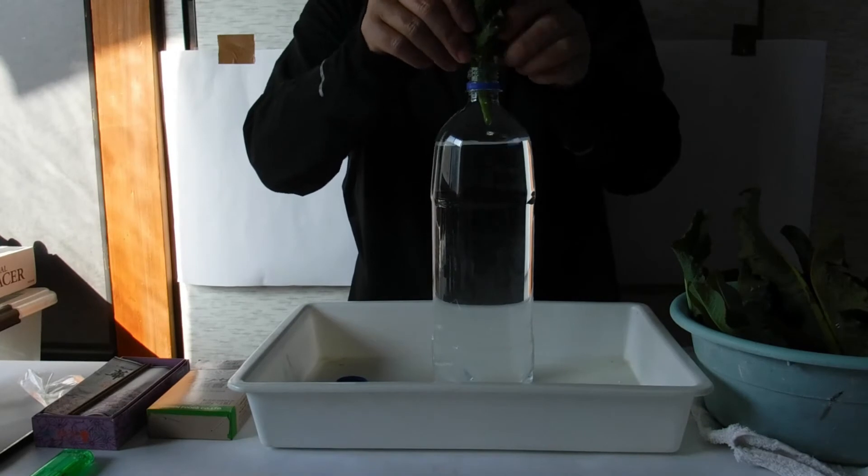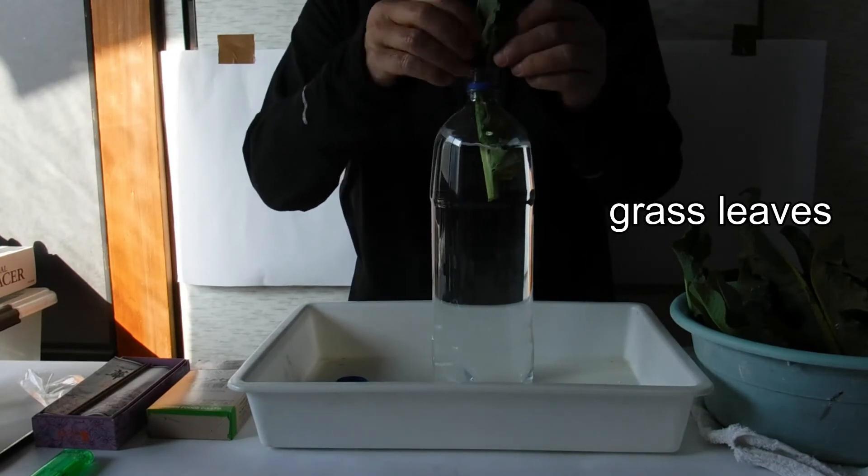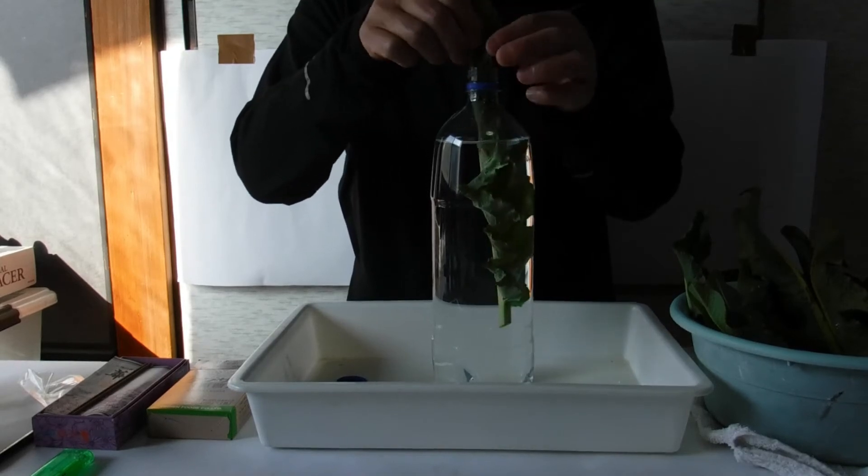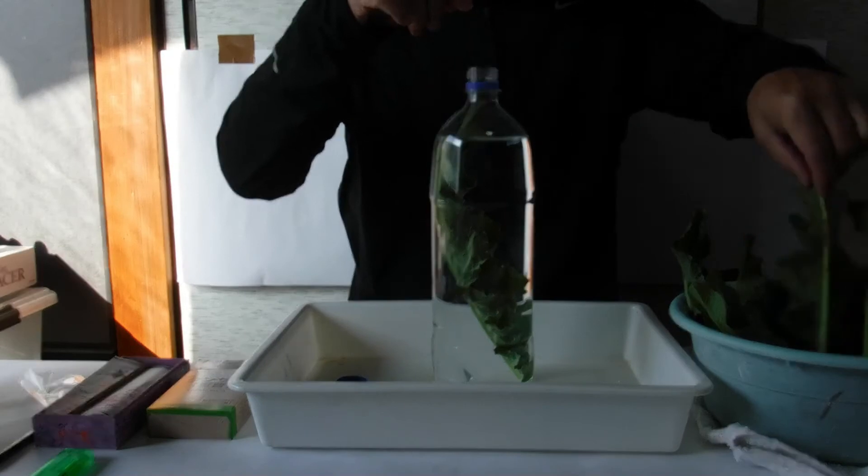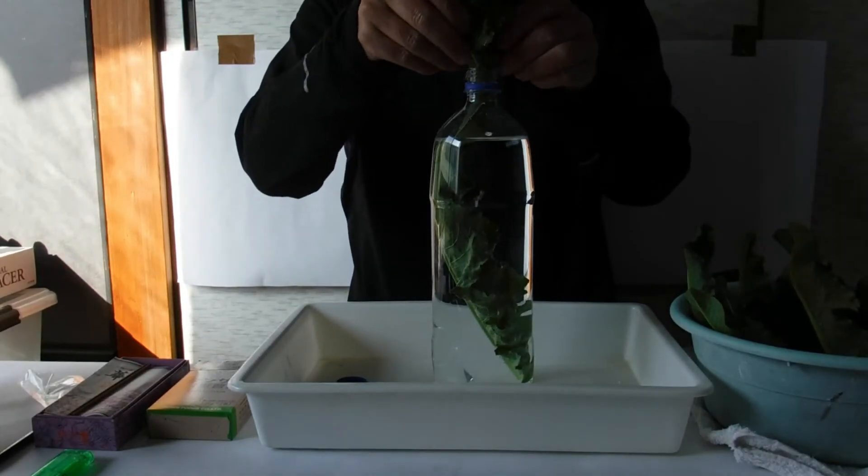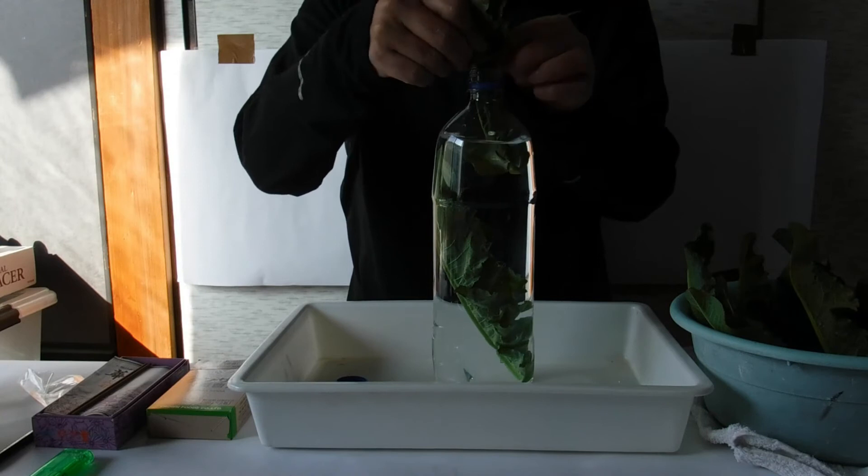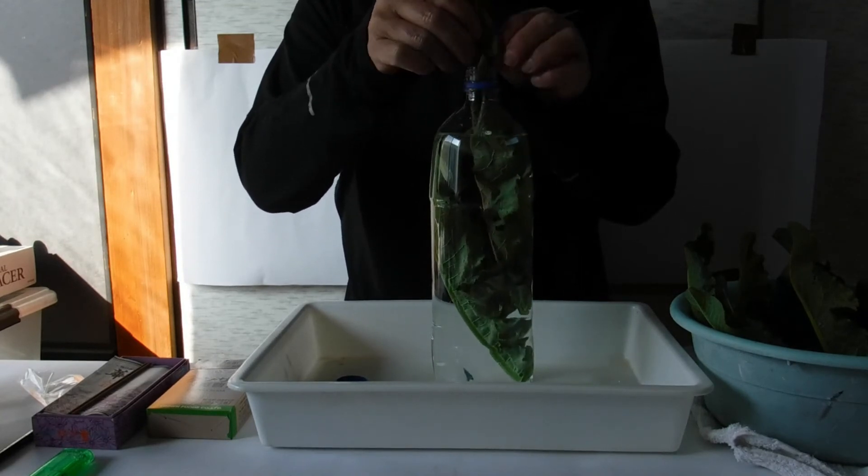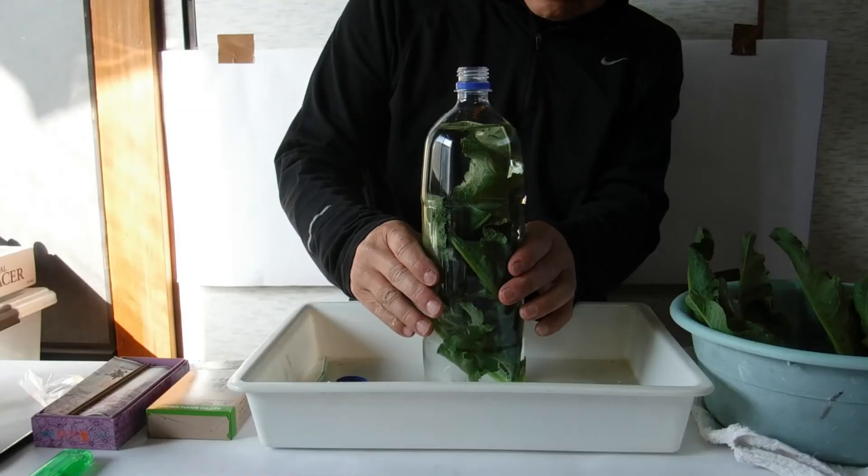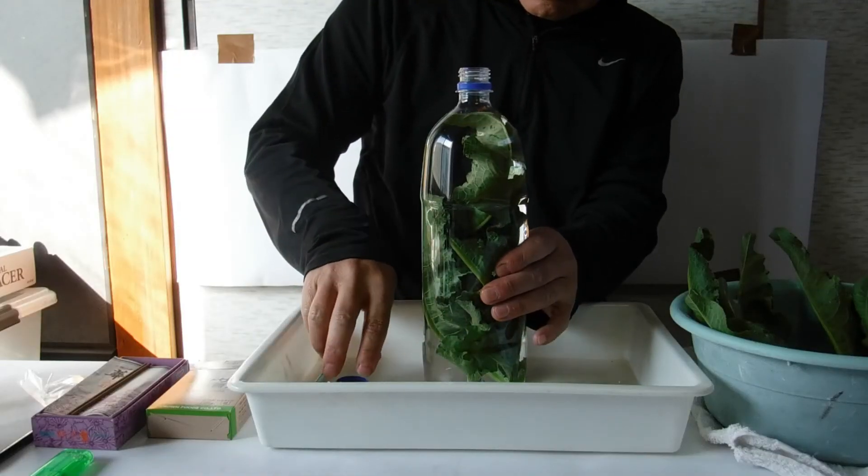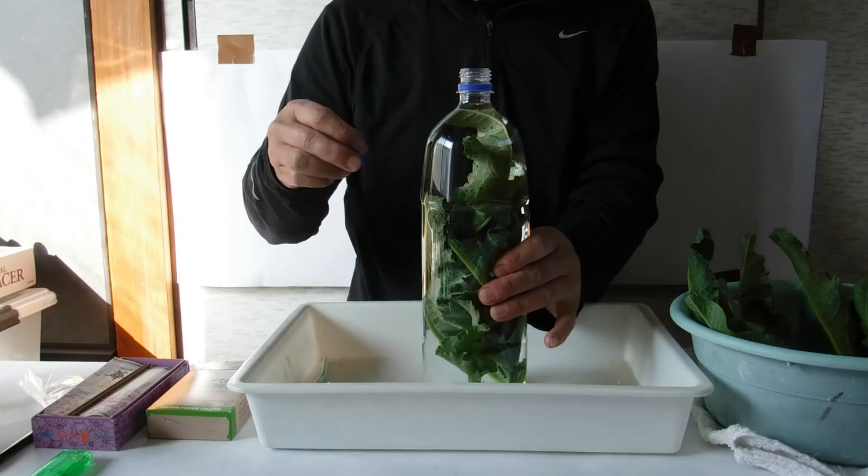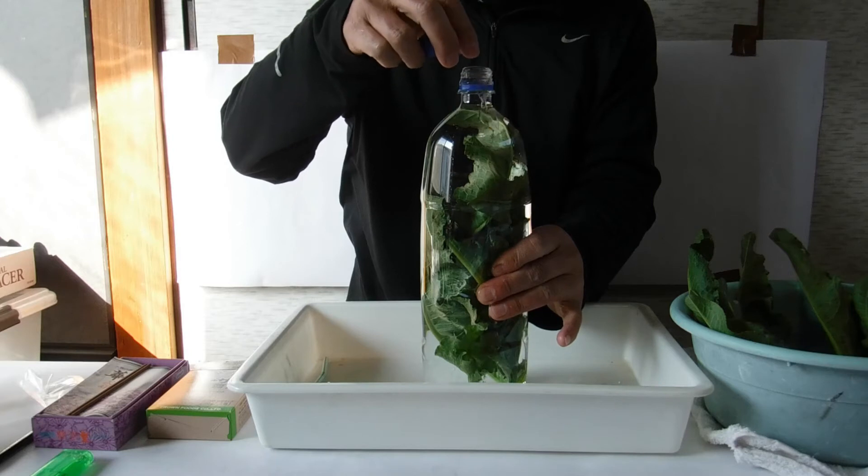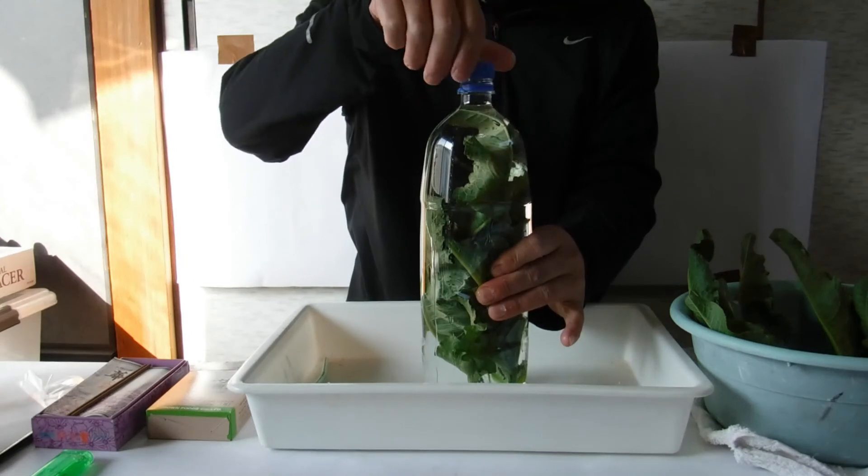Put the plant deep in the pet bottle. Squeeze the bottle a little and close the cap to make a space for produced gas.